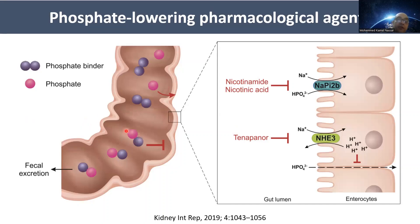Pharmacological agents work either as phosphate binders — binding phosphate to form a non-absorbable complex excreted in stool — or by blocking phosphate absorption. There are two mechanisms: blocking active transcellular absorption via nicotinamide and nicotinic acid by inhibiting the sodium-phosphate transporter 2B, or blocking paracellular transport through sodium-hydrogen exchanger inhibition by tenapanor, leading to intracellular proton accumulation, conformational change in tight junctions, and blockade of paracellular phosphate transport.